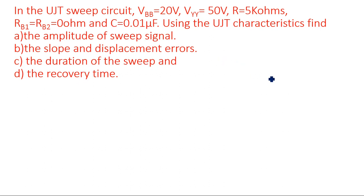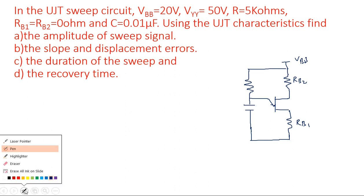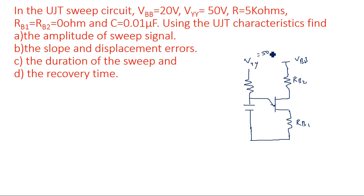Looking at the circuit diagram of the UJT relaxation oscillator or sweep circuit, we have resistance R and capacitance C, and the UJT with two resistors Rb1 and Rb2 — Rb1 is on the lower side and Rb2 is on the upper side. Vyy is given as 50 volts, Vbb as 20 volts, Rb1 and Rb2 are both 0 ohms, and C is the capacitor used for taking the output.